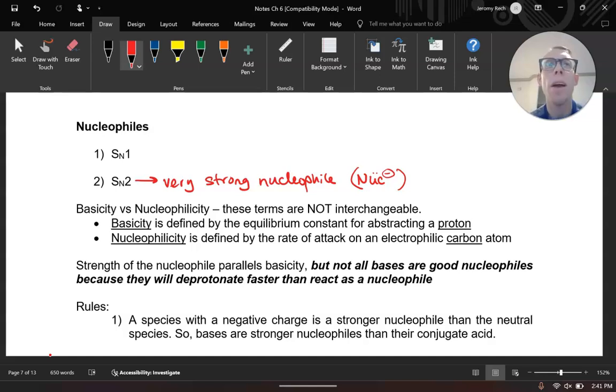For your SN2 reactions, for SN1, your nucleophile doesn't really matter as much. If you remember from our kinetics, in SN2, the rate of the reaction equals a rate constant times the concentration of your nucleophile, concentration of your R leaving group or your substrate. For SN1, it is just of your substrate, and your nucleophile does not even play any part in the actual rate determining step.